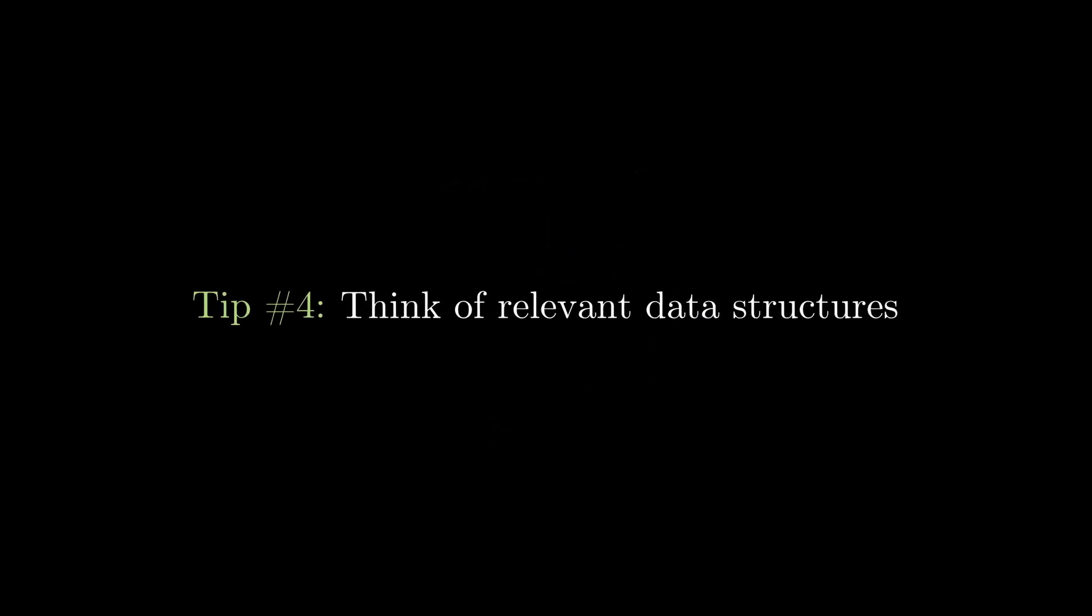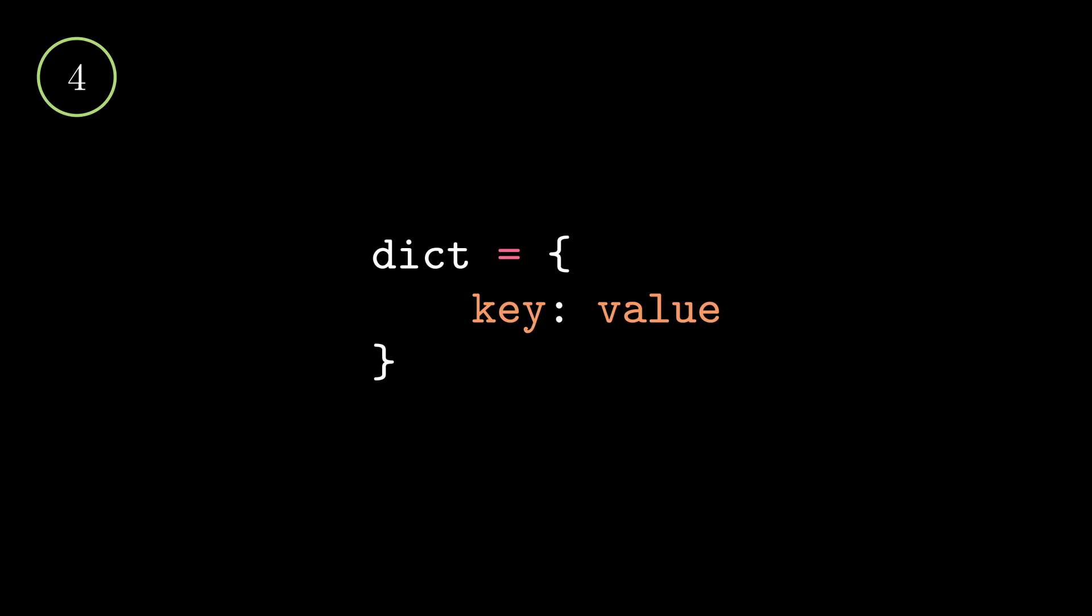This is tip number 4: Think of relevant data structures that can help you. For dictionaries, there's always a key and value pair, which perfectly suits our need in which the key can be the number that appears in the list and the value will be the number of times in which it appears. Don't worry if you are unfamiliar with the different data structures and their properties at first. As you gain experience by coding more, it will eventually become second nature to you.